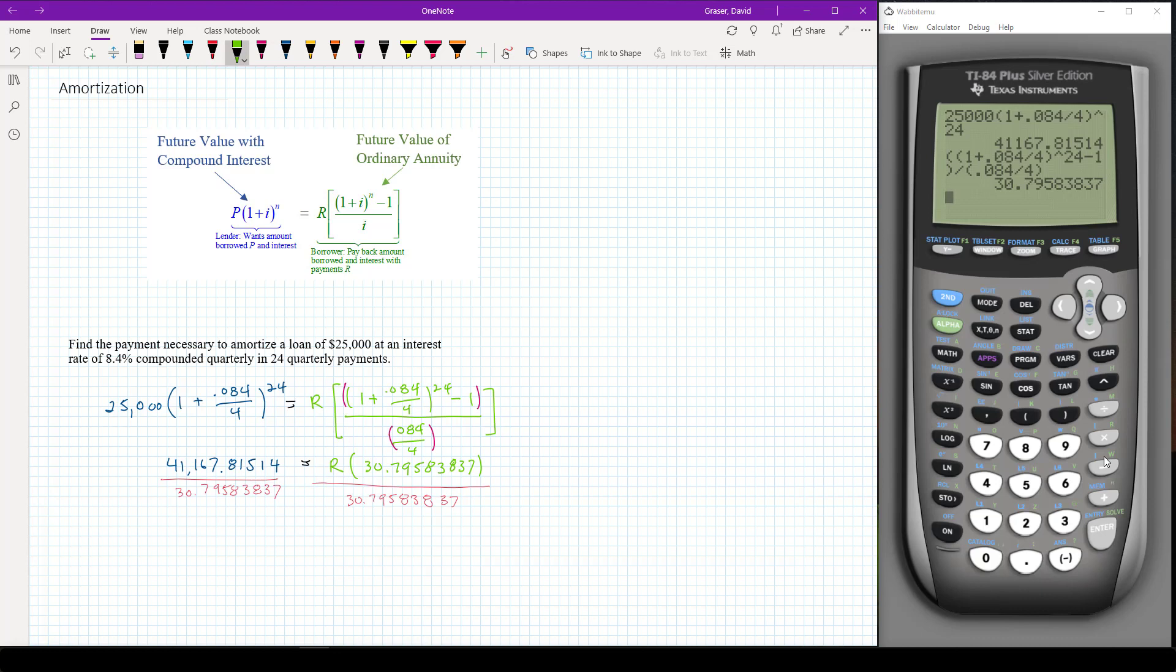And so that will give me my R value. Now I've got that 30.79583837 with all those decimals in the calculator already. So let me type 41,167.81514, that was the number that we had before. I want to check to make sure I've got all that correct.